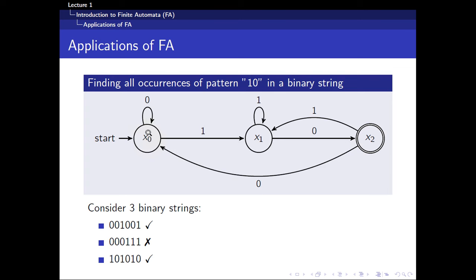You move one time, two times, three times and you see three ones. You move one, two, and three. At the end of the string you didn't really make it to X2, so you can stop and declare that there is no such pattern within the binary string. For the last example, you see one-zero, one-zero, one-zero, and you realize that you actually reach the final state three times, in which you can declare that there's a total of three occurrences of one-zero within the binary string. This is just one of the many examples.